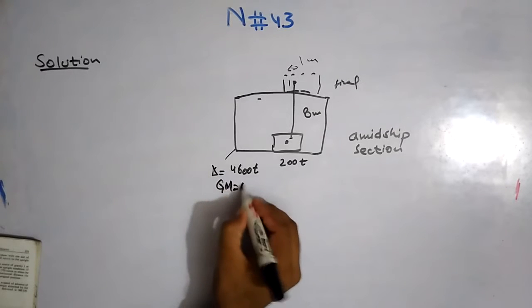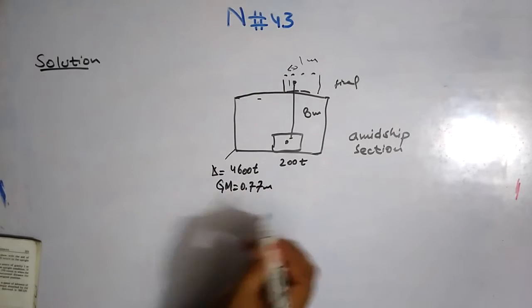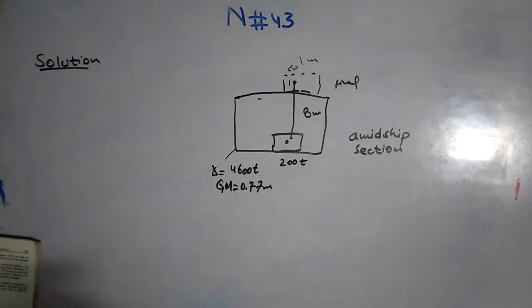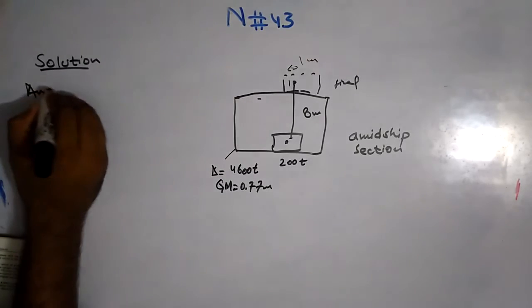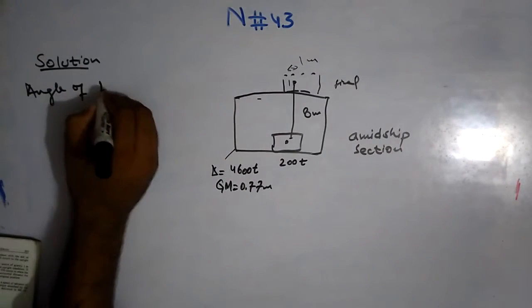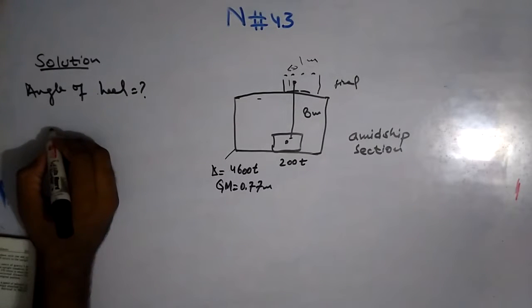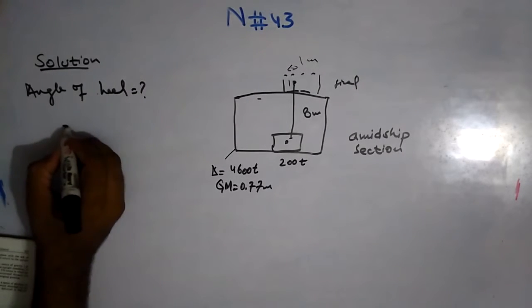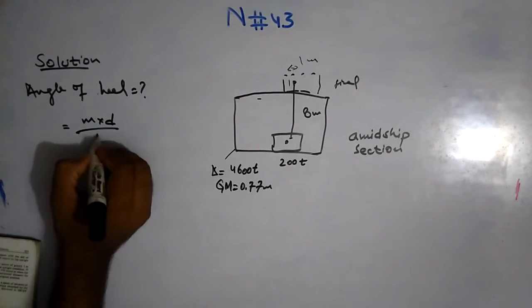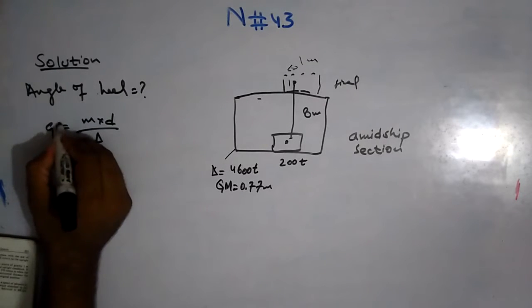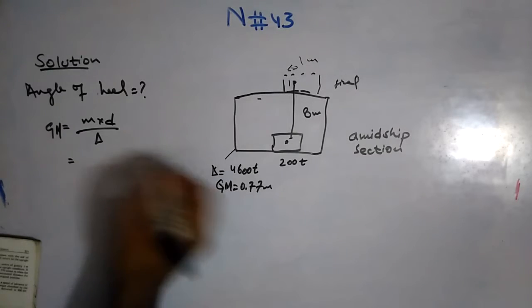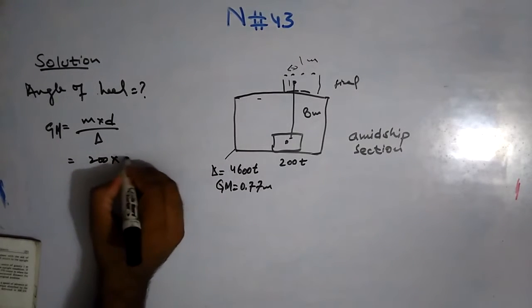And the metacentric height GM is equal to 0.77 meters. So we have to calculate the angle of heel. For this I have the formula: M×d = GM×Δ×tan(θ).